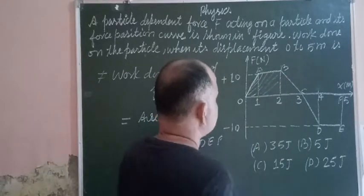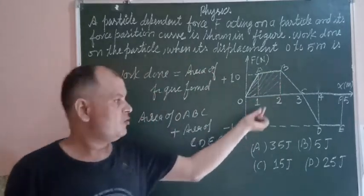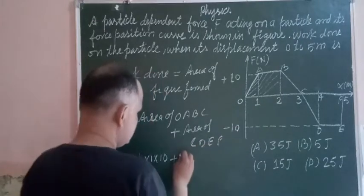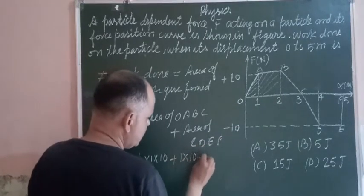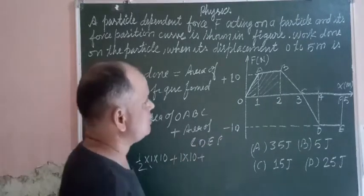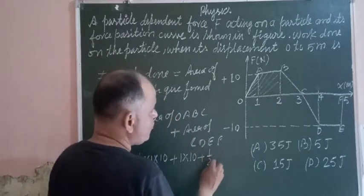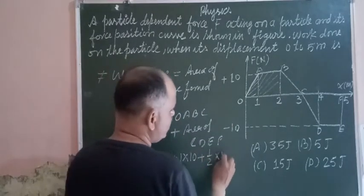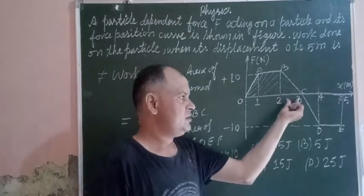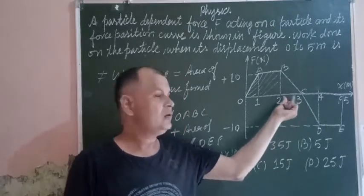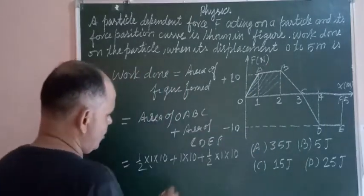This part is a square of side 1 by 10. So 1 into 10, plus the area of the triangle which is half of 1 into 10. So we have a square and a triangle. The values here are 5 and 10.